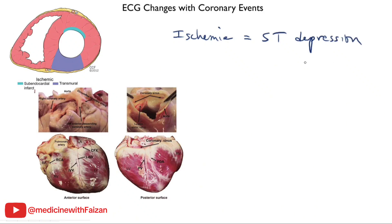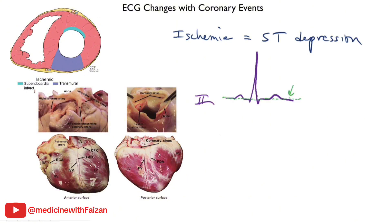Now it doesn't always correlate precisely. Let's say you have a subtotal occlusion of the right coronary artery so the underside of the heart is now ischemic. Under normal circumstances lead 2, lead 3, and lead AVF will tend to be upright and the ST segment is isoelectric with the baseline. When ischemia occurs, what you generally see is ST segment depression, and you can measure that amount of depression in millimeters. So in lead 3, for example, you will see this ST segment depression.